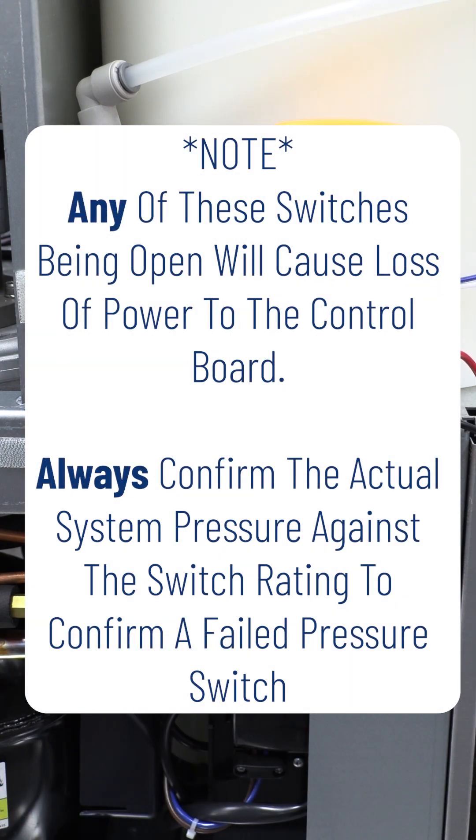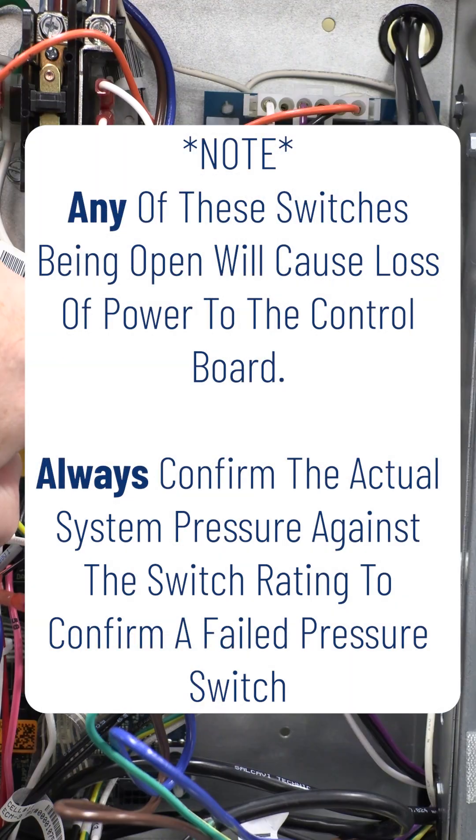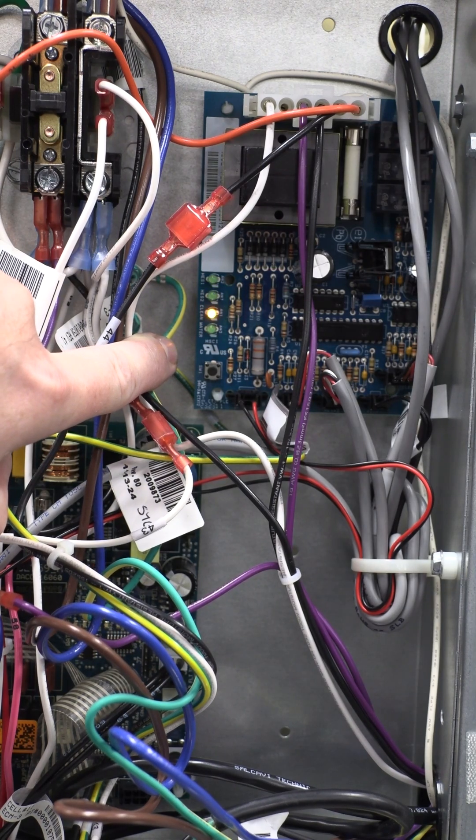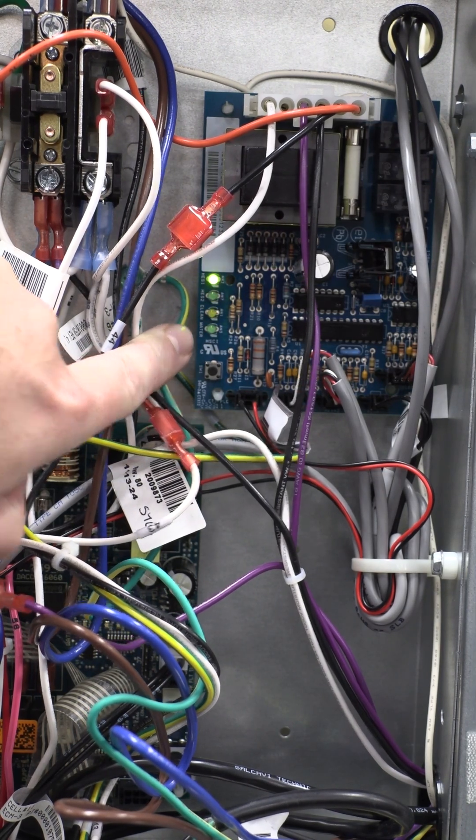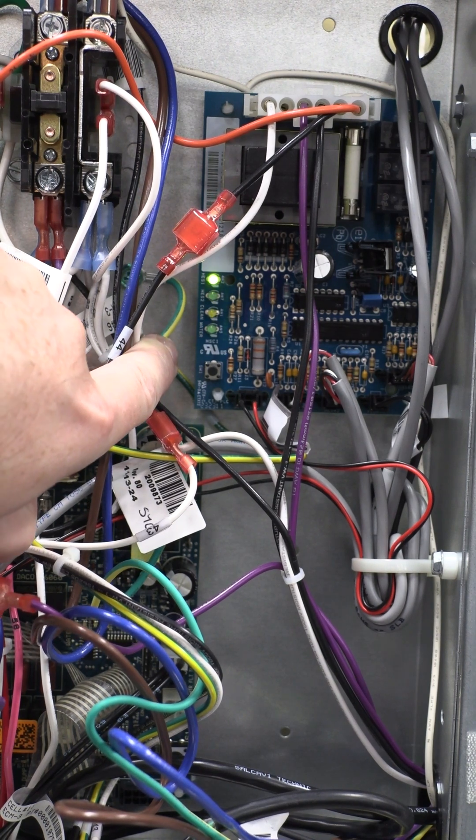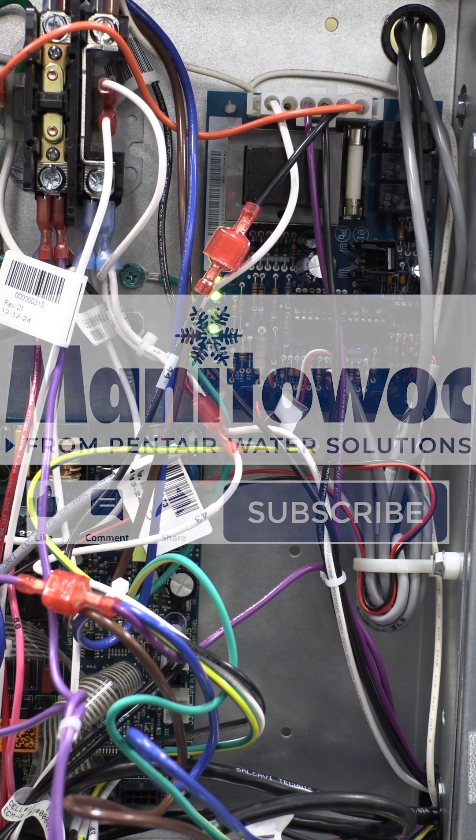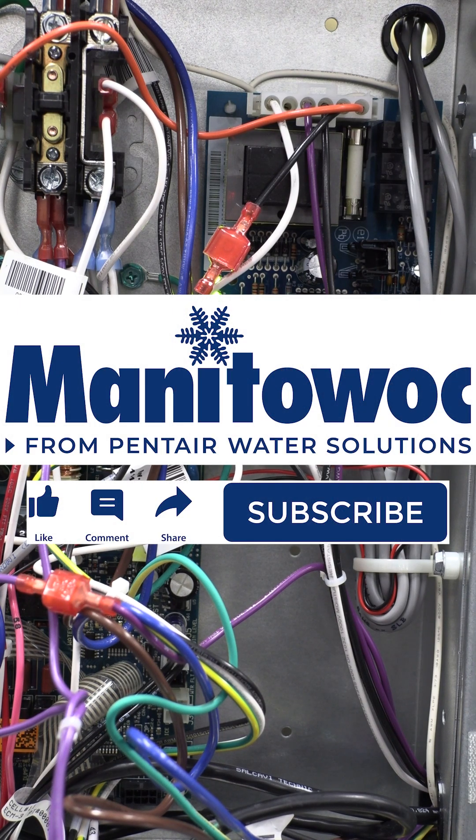I just got done replacing that high pressure cutout switch that failed on this machine. As you can see, I've restored power to the machine. Our board now has power as it should and we are in a delay. As you just heard, the delay ended. Contactor pulled in, our compressor is running, and we'll be making some ice. Close to the next one.